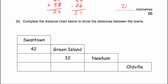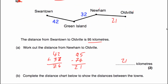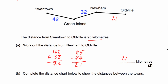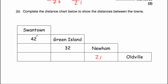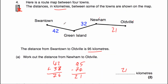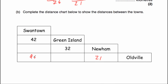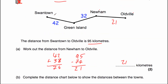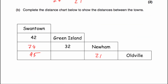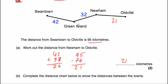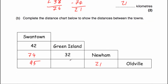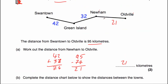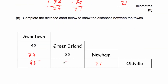Part B — we've been asked to complete the distance chart to show the distance between the towns. We worked out Newham to Oldville is 21 kilometres, so let's put that on. The 32 and the 42 have been put in for us. The total distance from Swan Town to Oldville was 95 kilometres, so let's put that in. For Swan Town to Newham, we add 42 and 32 — that's 74 kilometres. And finally the distance from Oldville to Green Island: if we add 32 and 21, that's 53 kilometres.